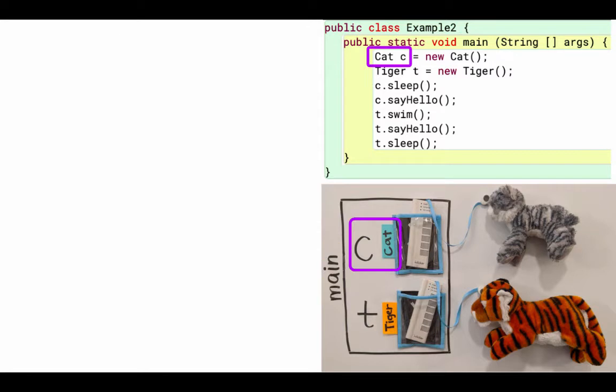My next line starts off cat c, so that creates a variable with the type cat, and then the right-hand side makes a new cat object. Okay, and then that assignment statement will assign those.